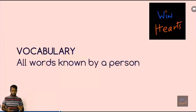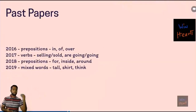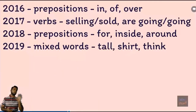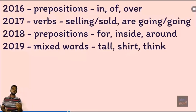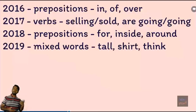Now what have you got to do? In the 2016 paper, we can see that most of the vocabulary was based around prepositions such as: in, on, at, around, through, in front of, behind — these sort of things.